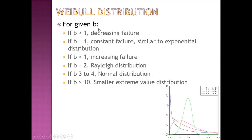With various values of beta: if beta is less than 1, there is decreasing failure rate. If beta equals 1, there is constant failure similar to exponential distribution. If beta is more than 1, there is increasing failure, important for the wear-out phase of machines. If beta equals 2, it is the same as Rayleigh distribution. If beta is 3 to 4, it approaches normal distribution. If beta is more than 10, it resembles the smallest extreme value distribution.